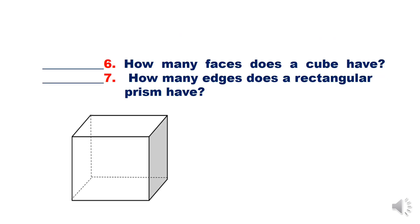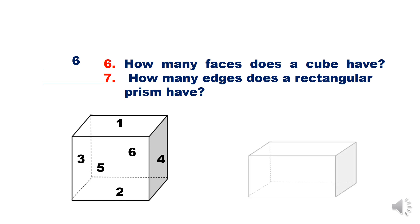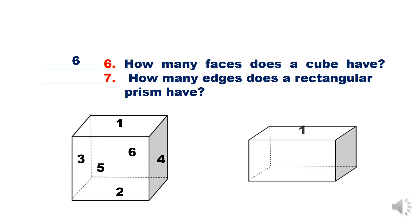How many faces does a cube have? Let us count: one, two, three, four — the front view — five, and the back view — six. There are six faces in a cube. For number seven, how many edges does a rectangular prism have? Let us count: one, two, three, four, five, six, seven, eight, nine, ten, eleven, twelve. There are 12 edges in a rectangular prism.